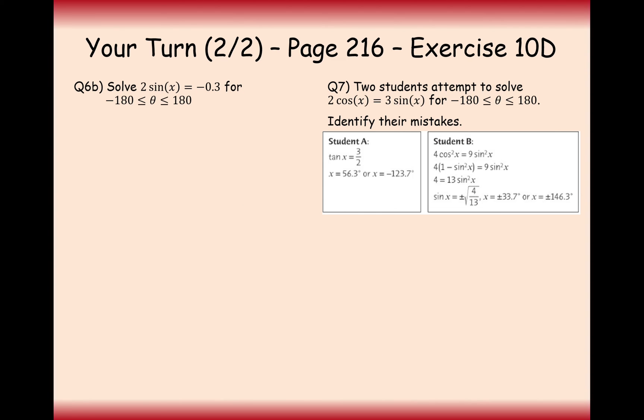Okay, there's a second set of questions here as well. Pause the video and have a go at these two. All right, so well done for having a go at these two questions here. So the first question here is 2 sin theta equals minus 0.3. The first thing I would do here is divide by the 2 here. So sin of x equals minus 0.15.